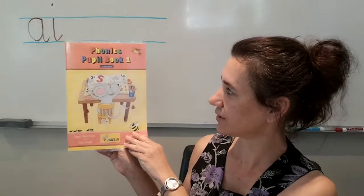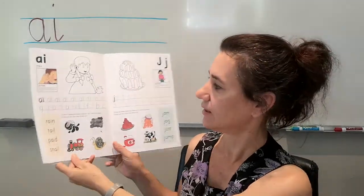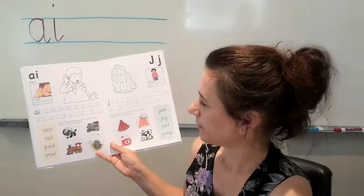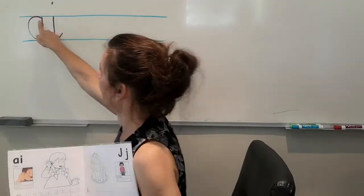So you have the story about the sound AI. And then the phonics book, page 20. Here you can practice your handwriting. Can you still remember that?